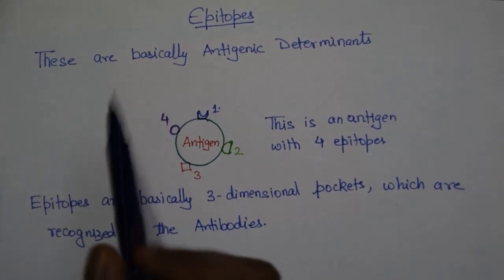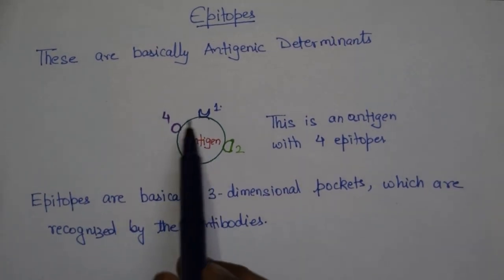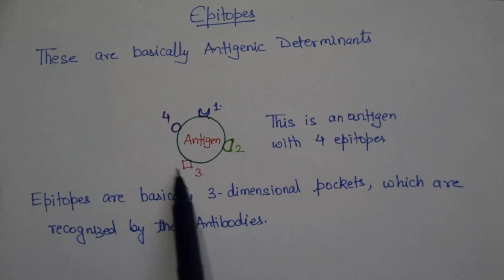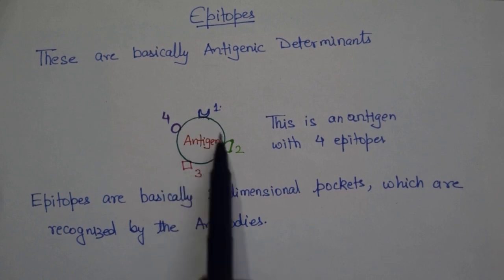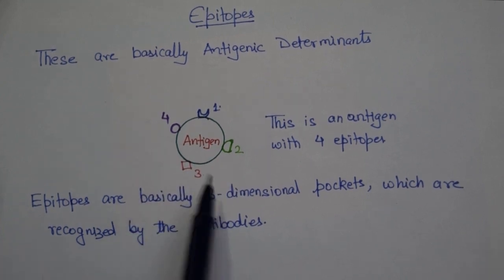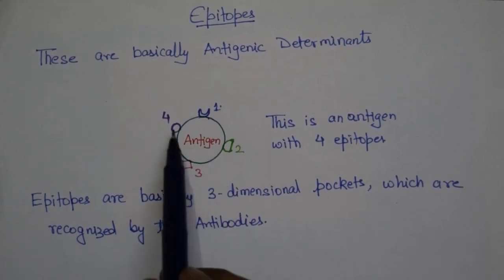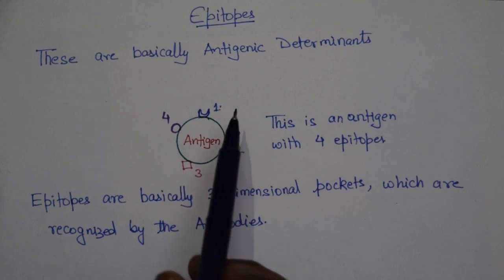What are these? Now here you can see an antigen and there are four determinants I have shown. Can you see? One, two, three, and four. Now these four are basically antigenic determinants or epitopes.